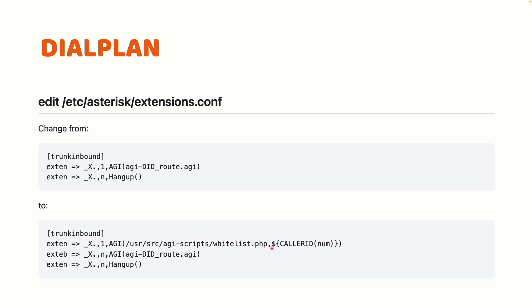We are passing the caller ID to whitelist.php as the argument referenced as CLID in the PHP AGI script. This line checks if the caller ID is in the database. If it is not, it will hang up and not proceed to the next item in the dial plan. But if it is in the database, it returns and moves to the next line, which is the default VICIdial configuration — sending the call to our inbound groups or DIDs. The mechanism is the same for other systems like FreePBX or Issabel; you can use the same approach to route calls to an AGI script.